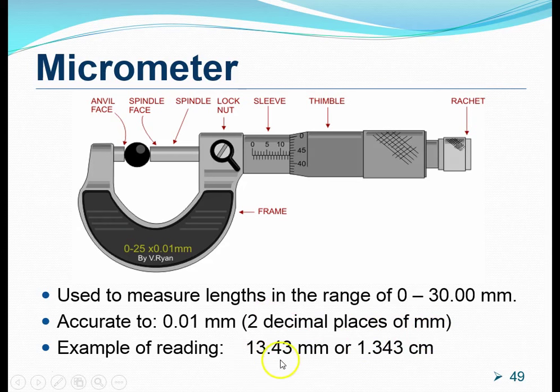Some examples of reading that we have is 13.43 millimeters. Or, we can express it in terms of centimeters by simply recalling that 10 millimeters equals 1 centimeter. Therefore, by dividing this by 10, we can have the measurements expressed in the unit centimeters.